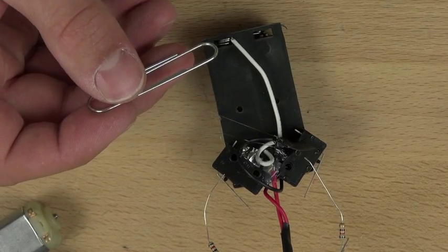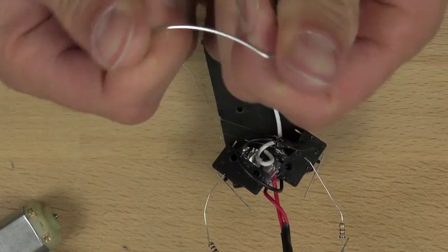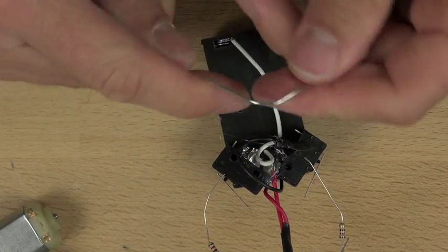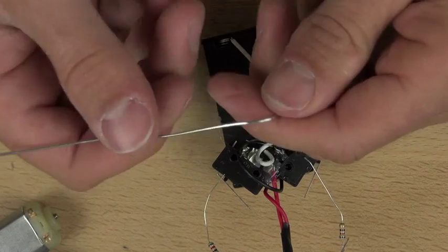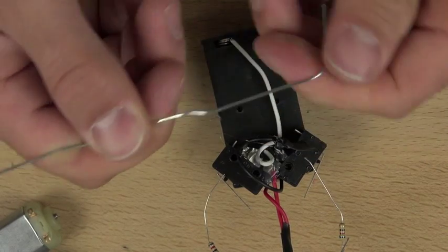OK, so now we're going to take a large paper clip and use it to make mounts for our motors. First thing we need to do is straighten the paper clip out. So we're going to remove all the kinks and bumps in the paper clip as much as we can with our hands.